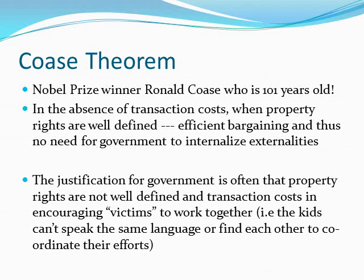This was the key idea of Nobel Prize winner Ronald Coase, who at 101 years old is still hard at work. The Coase theorem: in the absence of transaction costs, when property rights are well defined, efficient bargaining takes place, and thus there's no need for government to internalize externalities. But these conditions do not always hold. The justification for government is often that property rights are not well defined, and transaction costs stifle the ability of victims to work together. For example, with these 12 children — if the kids couldn't speak the same language or had trouble finding each other, those would be transaction costs which would limit their ability to negotiate with Sally.